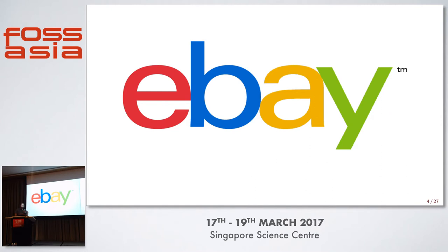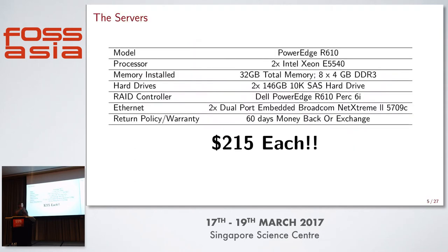When data centers upgrade their hardware, companies buy that used hardware, refurbish it, and put it up for sale on eBay very cheaply, especially hardware from almost a decade ago. After searching on eBay and graphing all of my options, I found these Dell PowerEdge R610s from eight or nine years ago at $215 each. They have two quad-core Xeons — eight physical cores and 16 virtual cores — and 32 gigs of RAM. They also came with two 10K SAS hard drives and a lot of NICs. So I bought five.